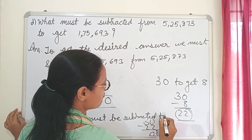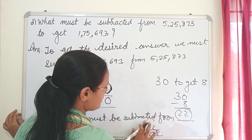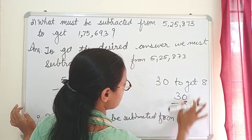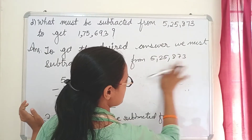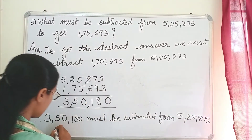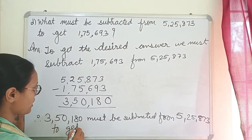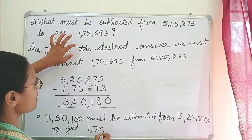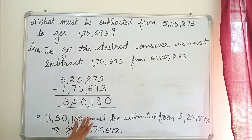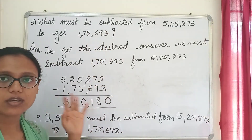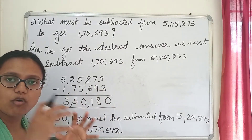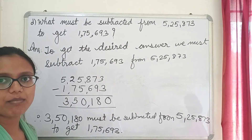3,50,180 must be subtracted from 5,25,873 to get 1,75,693. The final statement is exactly what was asked in the question — we have just replaced the unknown word with the answer. The statement is the same; we just filled in the answer.